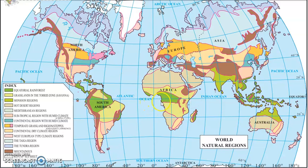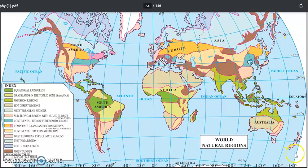The low latitudinal regions include equatorial rainforest climate, tropical monsoon climate, tropical savannah climate, and tropical desert or arid climate. Beyond 20 to 30 degrees north up to 40 to 60 degrees north and south comes the mid latitudinal region.